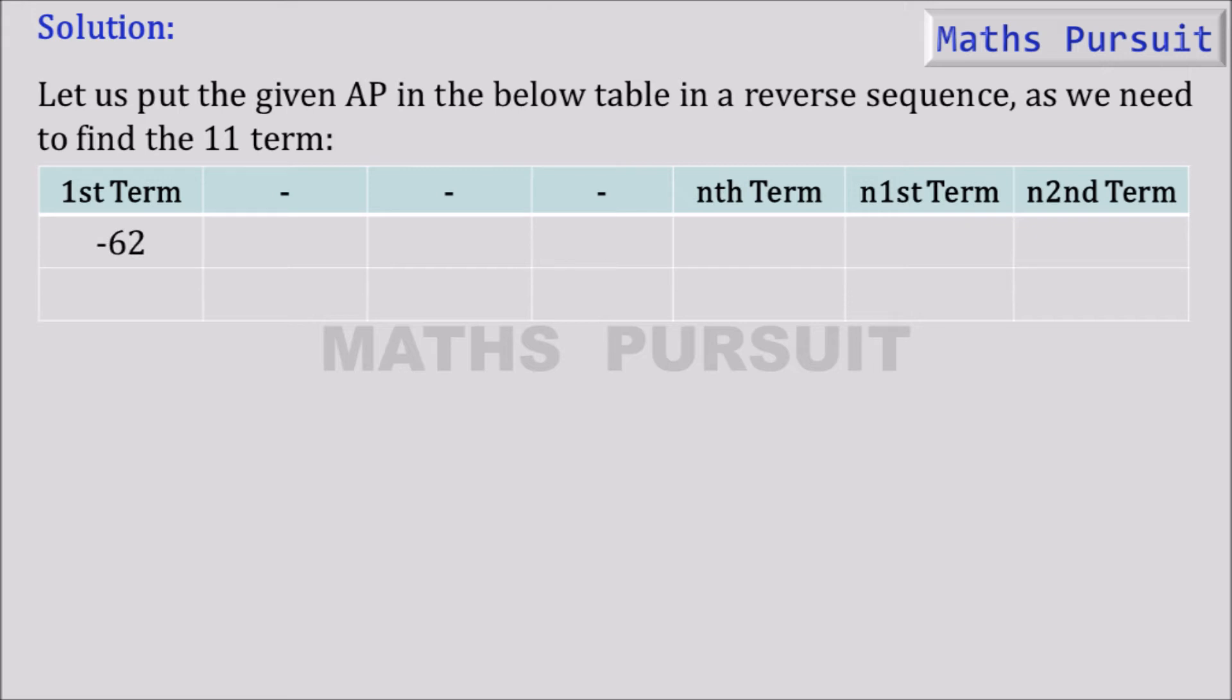Now putting -62 under first term and keeping three blanks as we don't know what could be there, and putting 4 under nth term, 7 under n first term, and 10 under n second term.